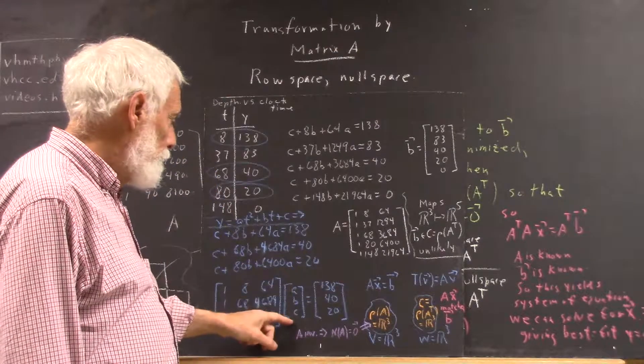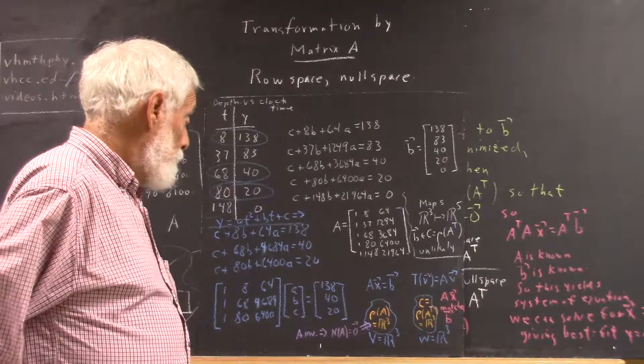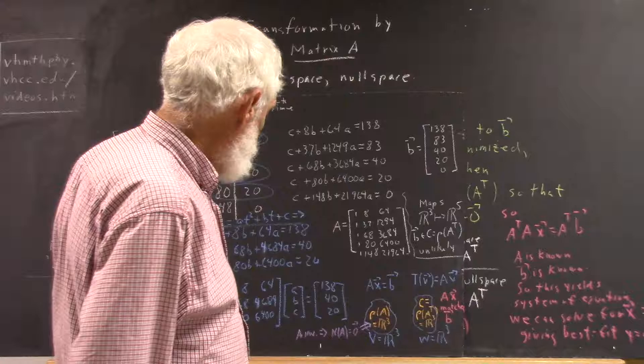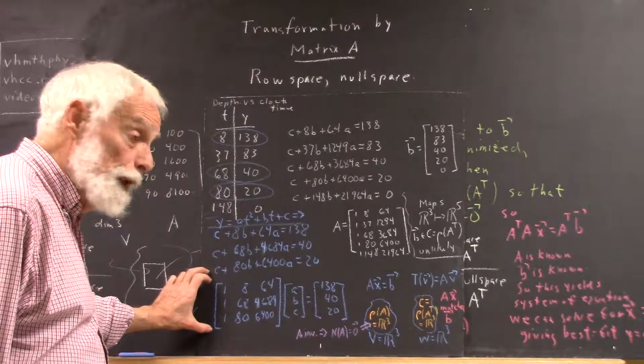And we're finding the vector that maps onto this specific vector. A picture of that, if our transformation is t of v equals a, v, where a is this matrix...